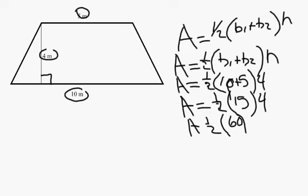When you're doing the problem, you do the base plus the second base in parentheses. When you get that answer, you put it in parentheses again. Then you multiply it with the height. When you get your answer, you divide the answer by two and you'll get your final answer.